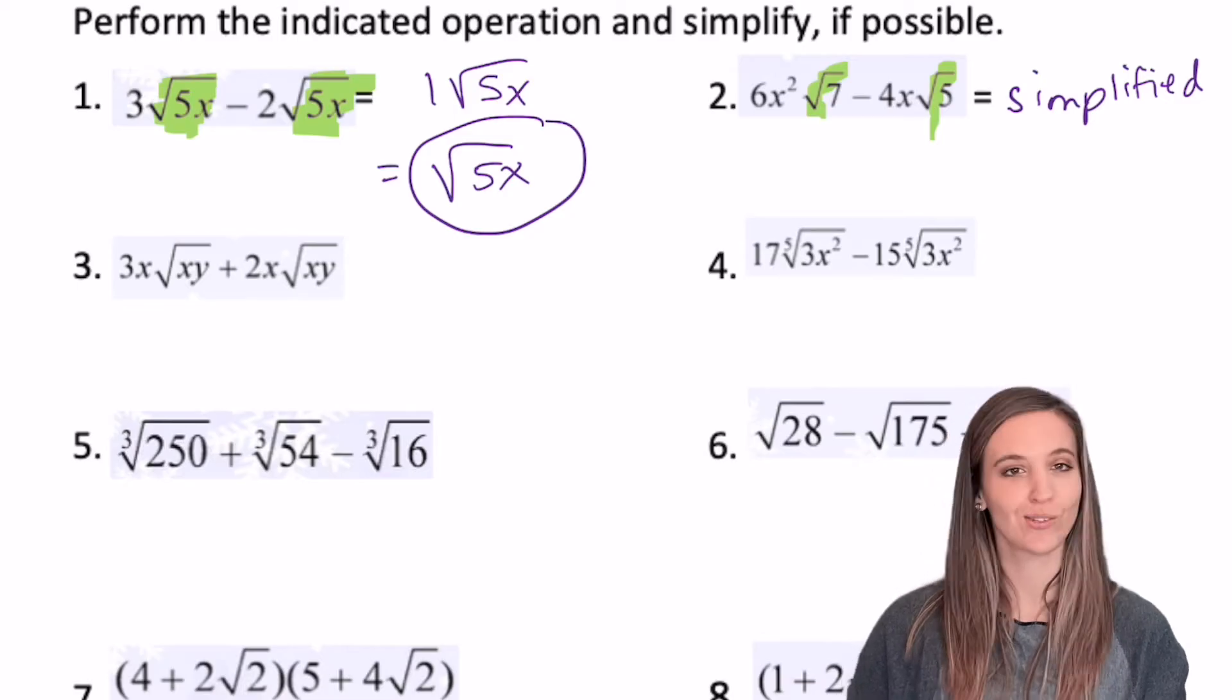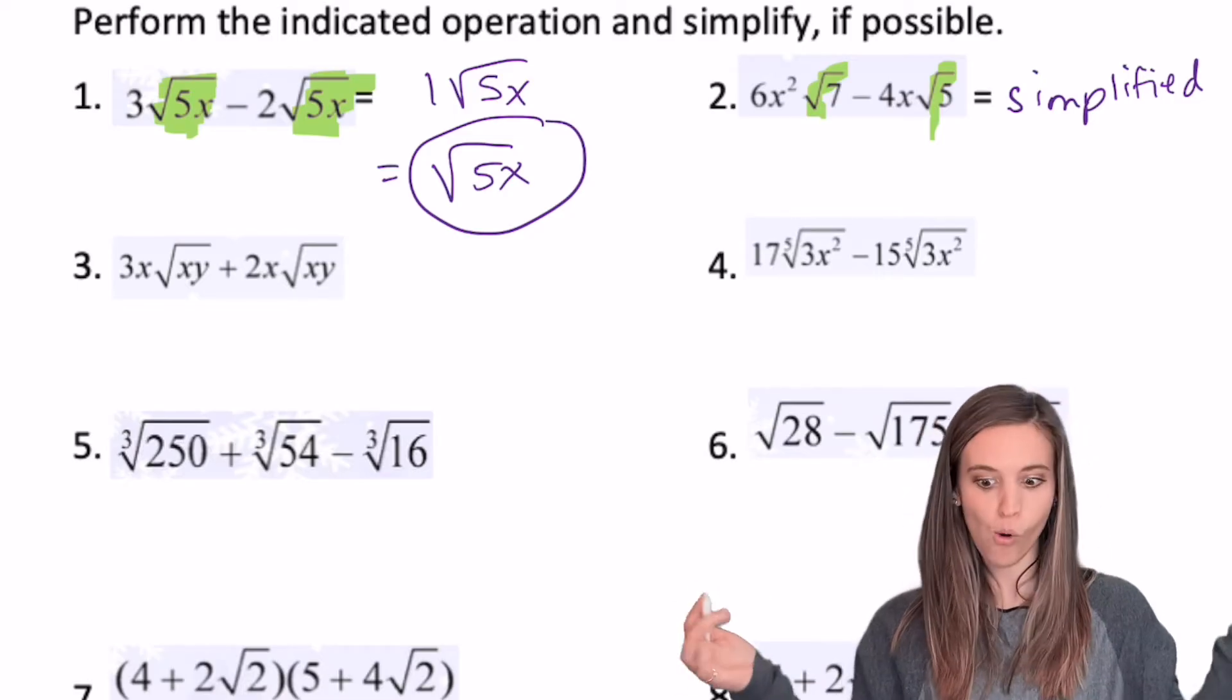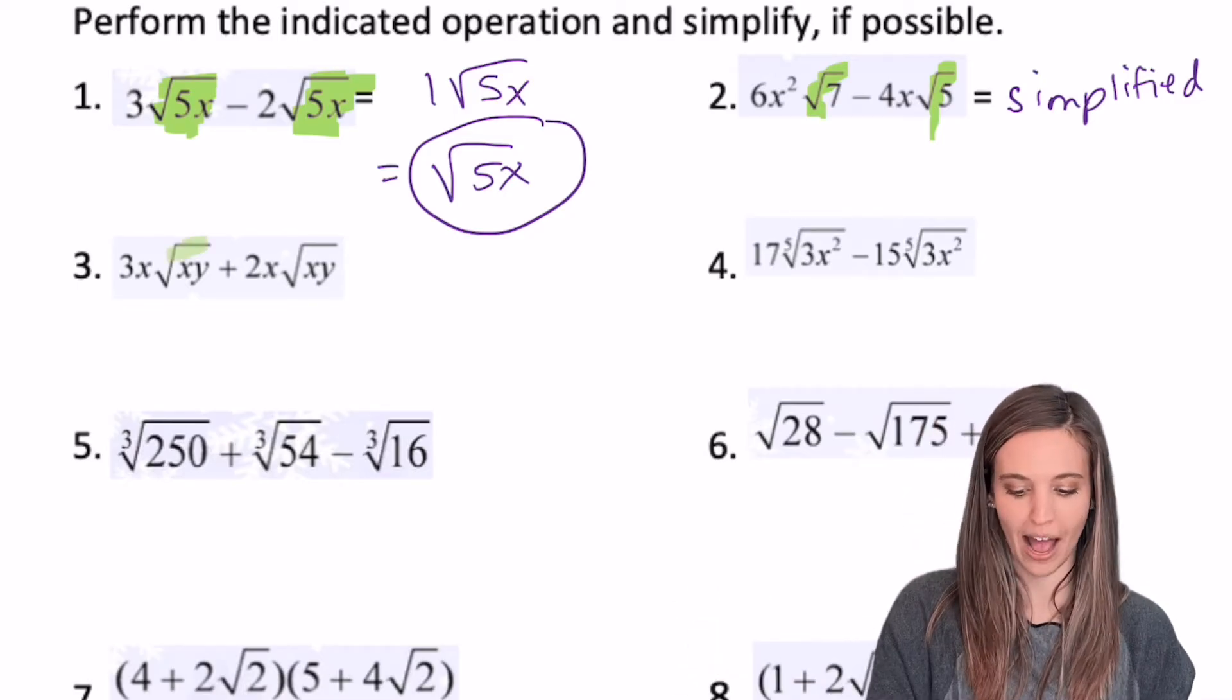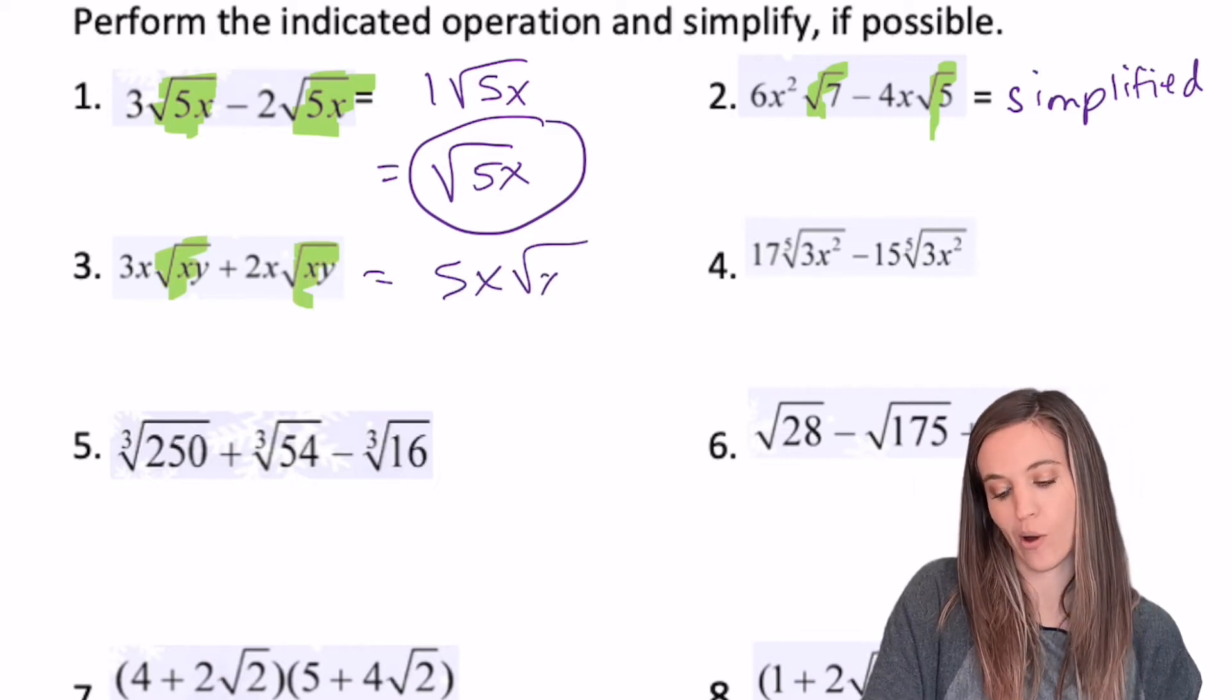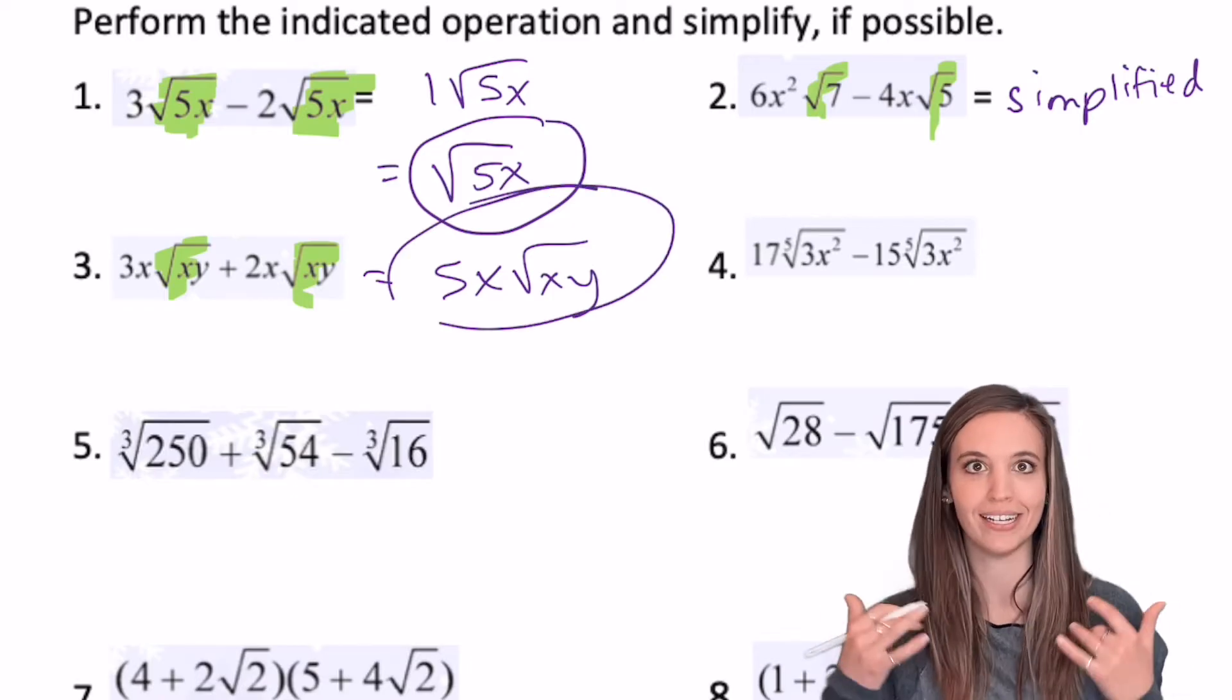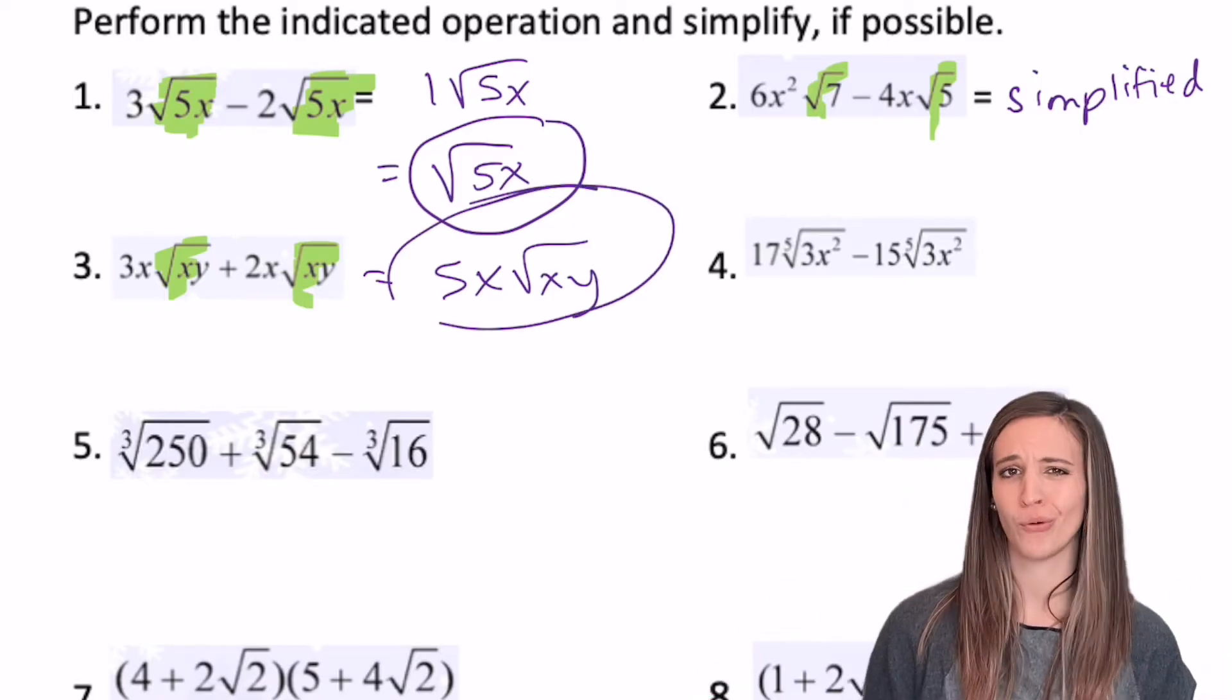Number 3, I have 3x times root xy plus 2x times root xy. We have identical radicals, so we can just add like normal. 3x plus 2x is 5x, and then I have that root xy along for the ride. Doesn't simplify any further, so I'm done there. Take a minute to get number 4 done.